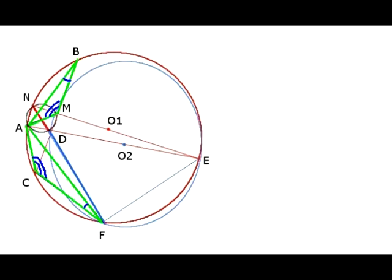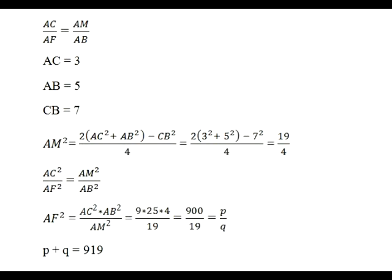This fact is the major discovery. It will allow us to calculate the length of AF. The length of AF can be found from the equation based on two equal ratios. The ratio of AC to AF, which is equal to the ratio of AM to AB. The length of AC is 3, the length of AB is 5, and AM is the median of triangle ABC, which can be found based on the lengths of the three sides of triangle ABC.